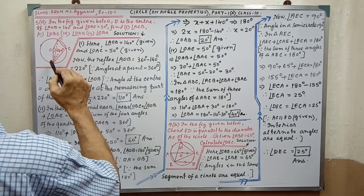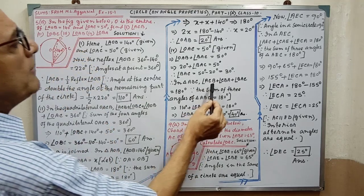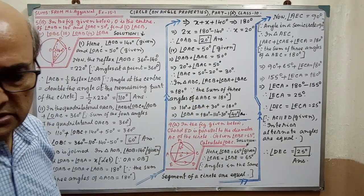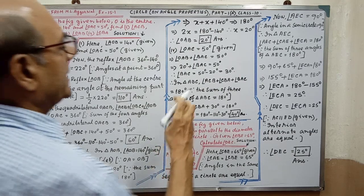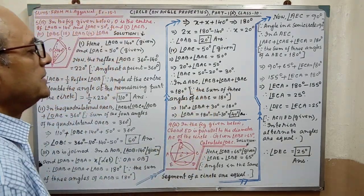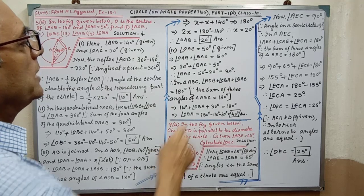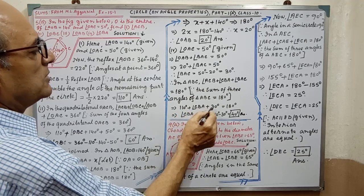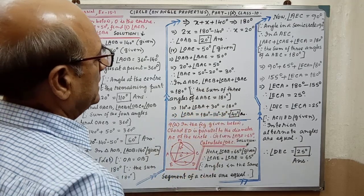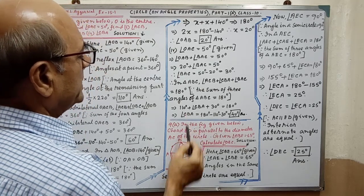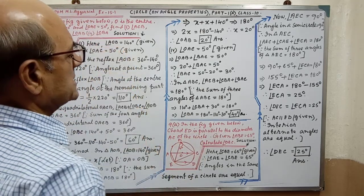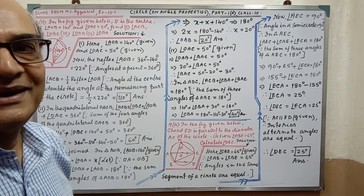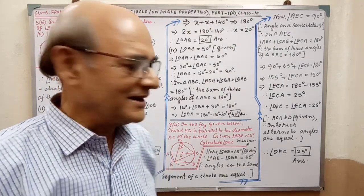Now in triangle ABC, the sum of the three angles is 180 degree — reason you have to write within brackets in this way. We have angle ACB equal to 110 degree, angle CBA plus 30 degree equal to 180 degree. By simplifying, we are getting angle CBA equal to 40 degree. The sum is completed. I think it is clear.